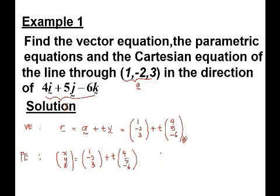Therefore X = 1 + 4t, Y equals, for the component j, -2 + 5t and for the component k, Z = 3 - 6t. So this is called the parametric equation.